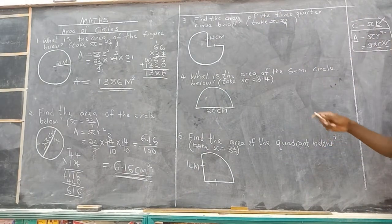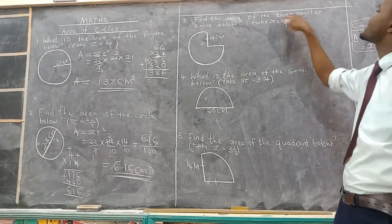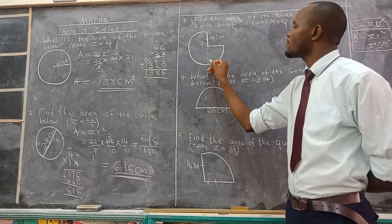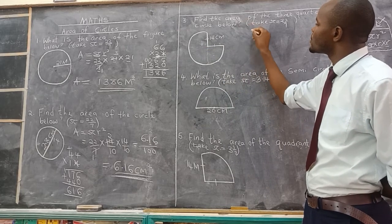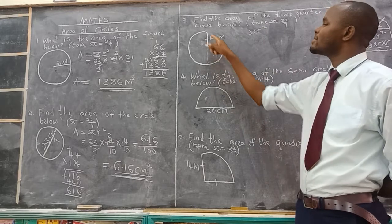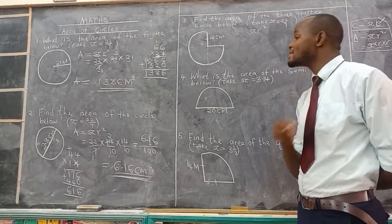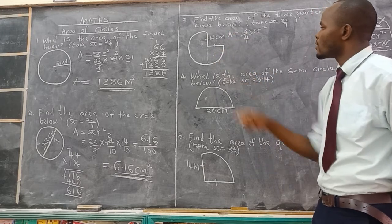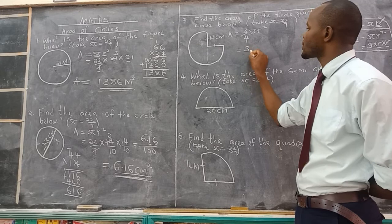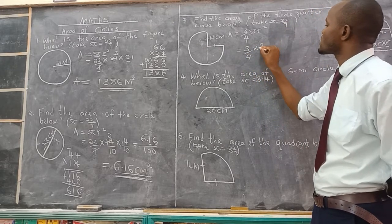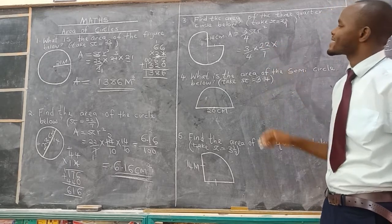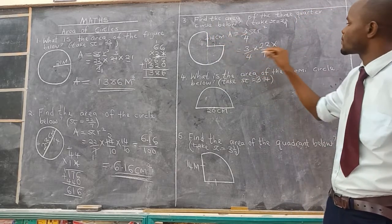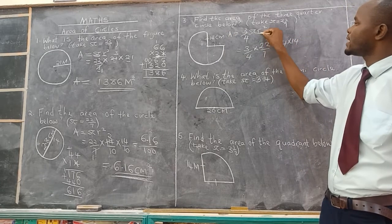Let's go to the third example: find the area of the three-quarter circle below. This is a three-quarter circle — we need three quarters. The formula for a full circle is pi r squared, but this one is three-quarters of a circle, so we write 3 over 4 times pi times r squared. Pi is 22 over 7, and the radius — from the center of the circle to the circumference — is 14.